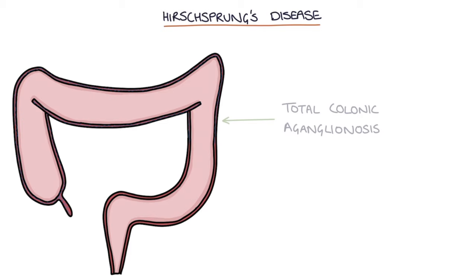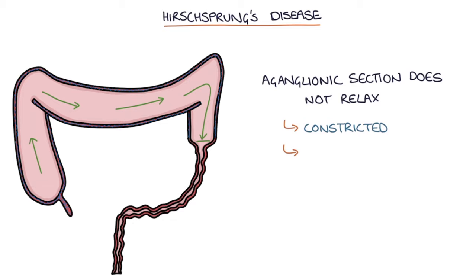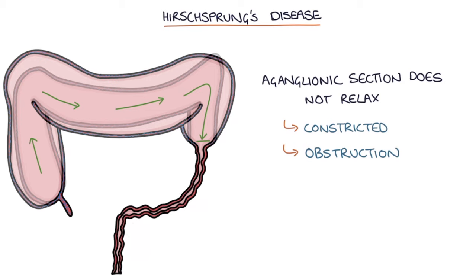The aganglionic section of the colon does not relax, causing it to become constricted. This leads to a loss of movement of feces and obstruction in the bowel. Proximal to the obstruction, the bowel becomes distended and full.